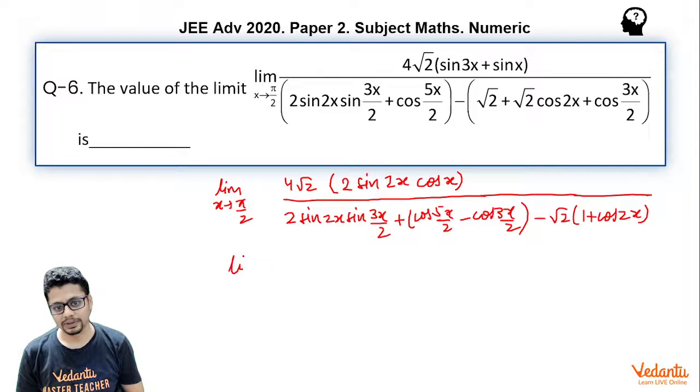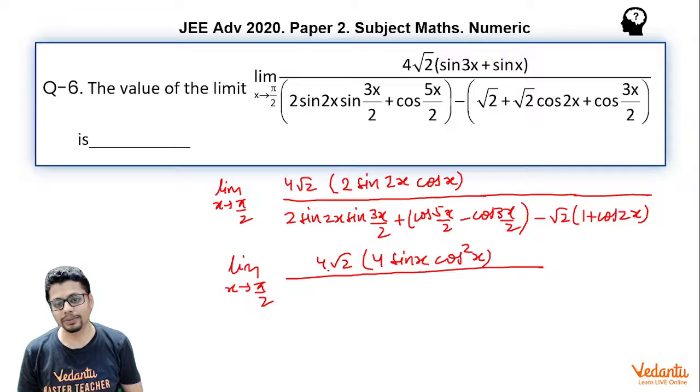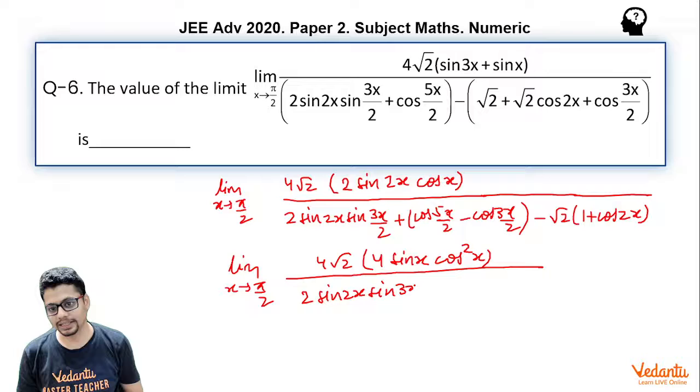Now also I can club 1 plus cos 2x. So what does this become? This essentially becomes, the numerator I can write as 4√2. Sin 2x I can write as 2 sin x cos x. So it becomes 4 sin x cos² x.